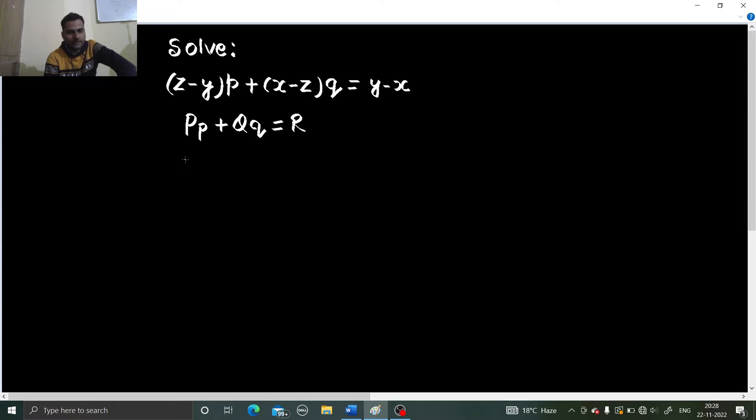So what we do? We write the auxiliary equation, Lagrange's auxiliary equation which is nothing but dx divided by capital P equals to dy divided by capital Q equals to dz divided by capital R. So if we compare then in this problem our P is coefficient of small p which is z minus y. Our Q is x minus z and our R is y minus x.